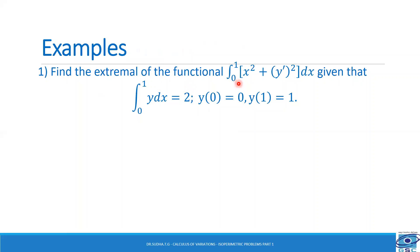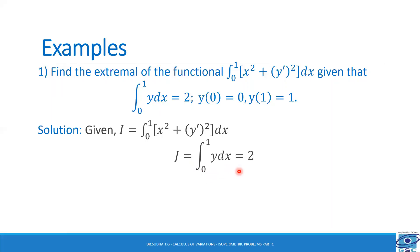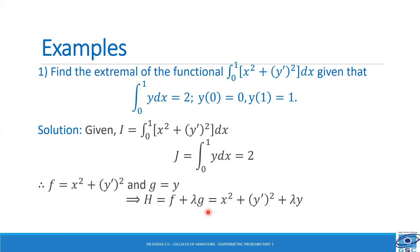Find the extremal of the functional I = integral from 0 to 1 of (x² + y'²) dx, given that integral of y dx = 2 with y(0) = 0 and y(1) = 1. Given: f = x² + y'² and g = y. We form the new function H = f + λg = x² + y'² + λy.